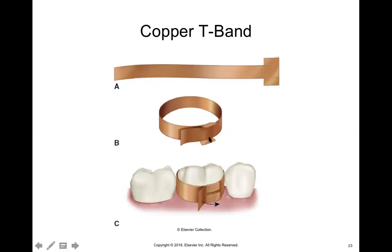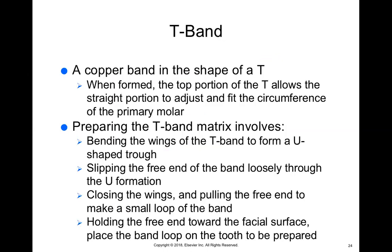The copper T-band comes in a long strip with two little flaps. You make it into a circle, fold the flaps over, and it becomes like a pulley. Once placed over the tooth, the doctor can pull the protruding strap to tighten or loosen it, and then it gets tossed after each patient. As the assistant, you just bend the wings, form a circle, fold the wings over the extended tail, and the doctor fits it over the tooth and adjusts tension as needed.